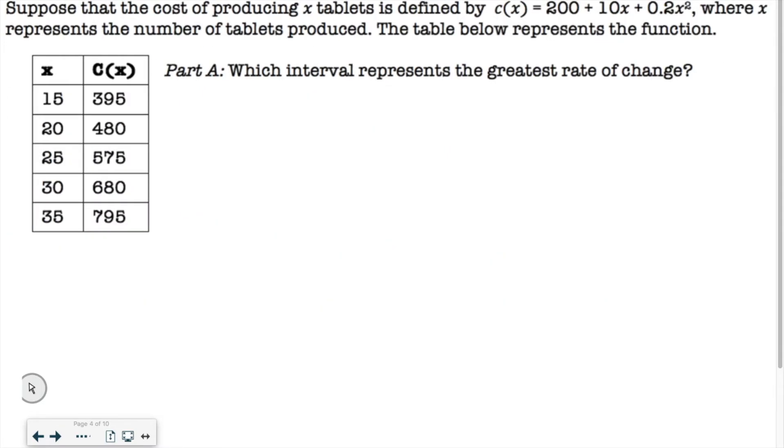All right, suppose the cost of producing X tablets is defined by C of X equals 200 plus 10X plus 0.2X squared, where X represents the number of tablets produced. The table below represents the function, which interval represents the greatest rate of change? All right, so we have several different intervals. So we should look at the Y values and see what the biggest rate of change is.